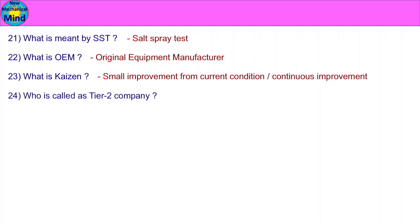Who is called a Tier 2 Company? A company supplying parts to a Tier 1 Company is called a Tier 2 Company.